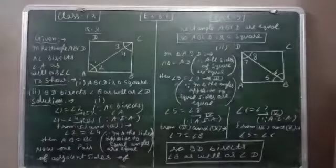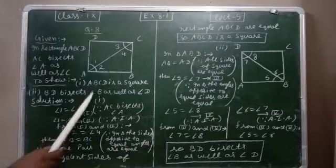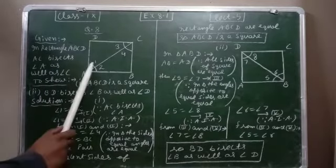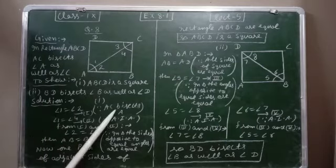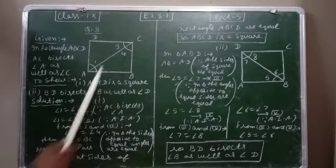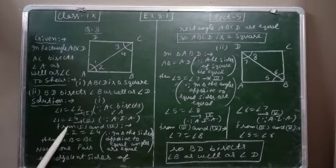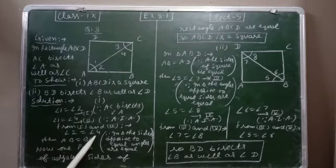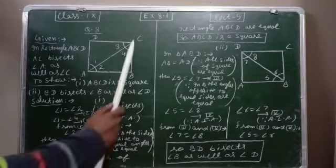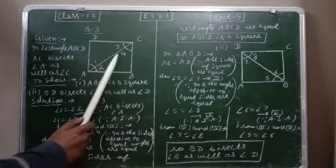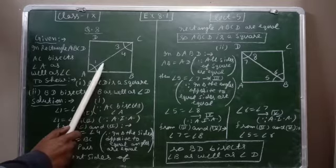The second part is that diagonal BD bisects angle B as well as angle D. For the first part: angle 1 equals angle 2 because AC bisects angle A. Then angle 1 equals angle 4 because of alternate interior angles. Since the left-hand side of both equations is the same, from equations one and two, angle 1 cancels, so angle 2 equals angle 4.